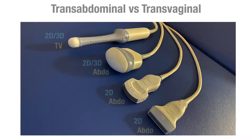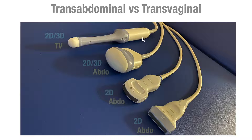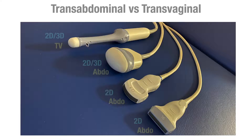When you want to do this examination, you have to choose what kind of probe to use. You can use a two-dimensional abdominal probe — a linear one with high frequency. You can also use a 2D and 3D abdominal probe. And there is a transvaginal probe with which you can also do both 2D and 3D.